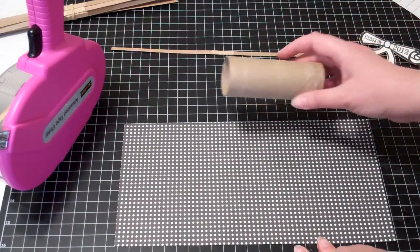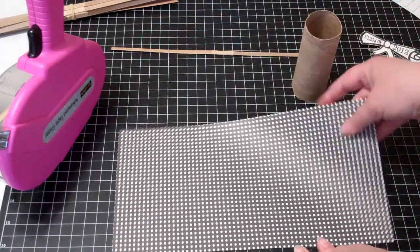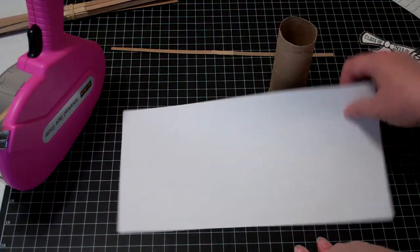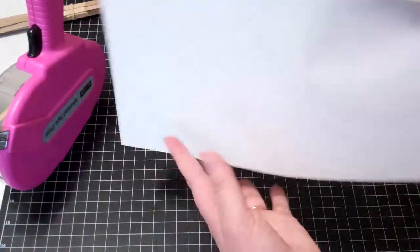Very simple. All you need is a toilet paper roll. You can also take a paper towel roll, cut it down to size, and a 6x12 piece of paper.